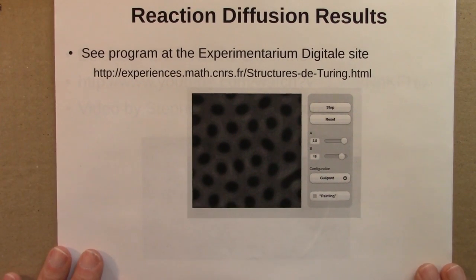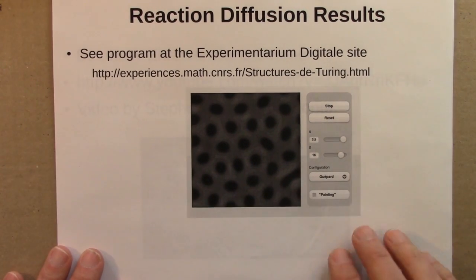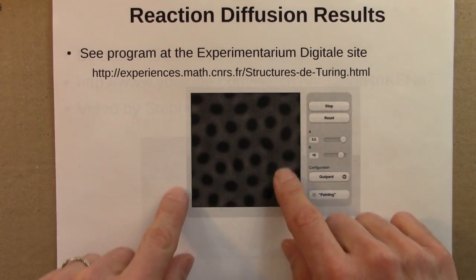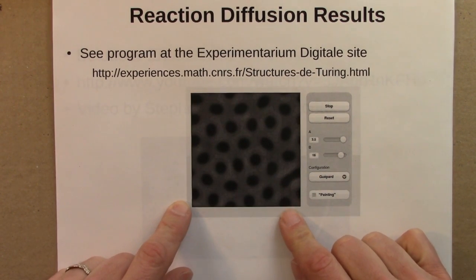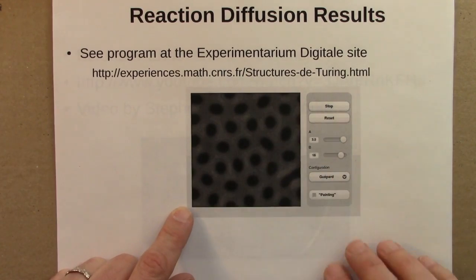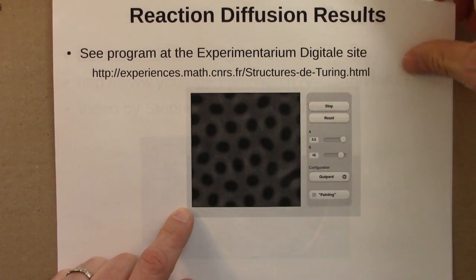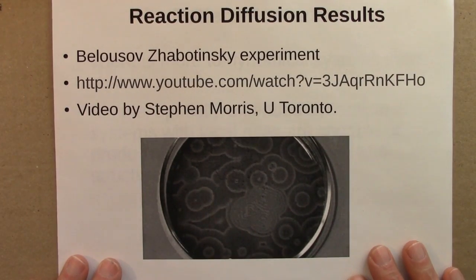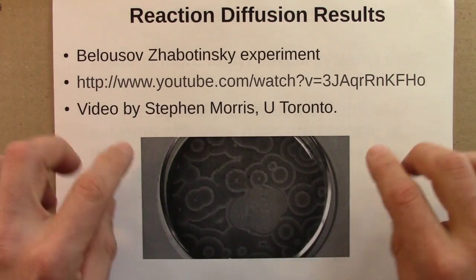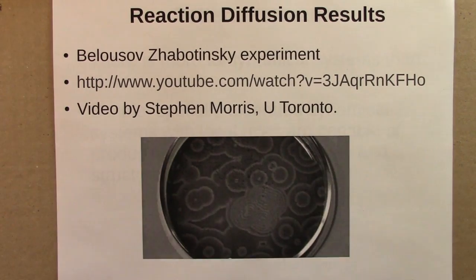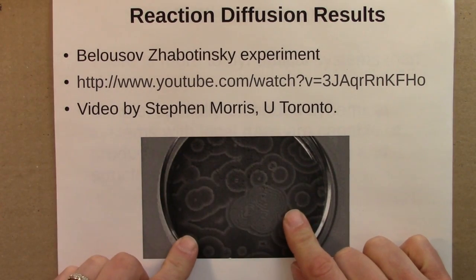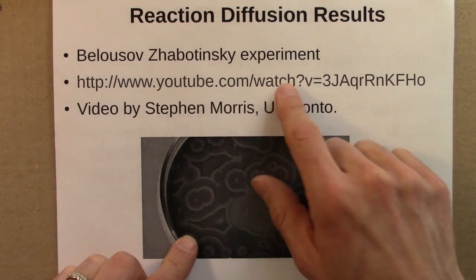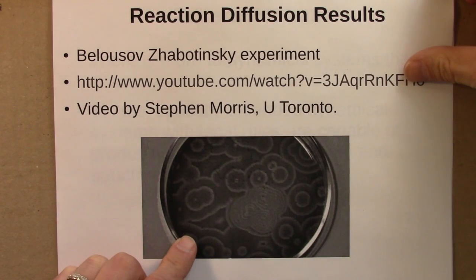So, just one quick example. We experimented with the reaction diffusion equations at the Experimentarium Digital site. Here's an example that we saw emerging from random initial conditions, these stable spots appear. And then we also looked at a video from Stephen Morris at Toronto, where two fluids are poured into this Petri dish, and like magic, these patterns start to emerge out of them. So, Belousov-Zhabotinsky is another example of a reaction diffusion system.